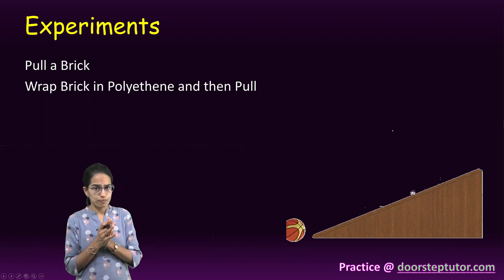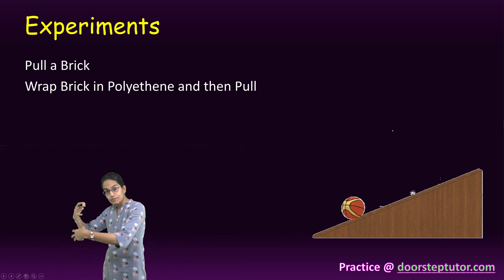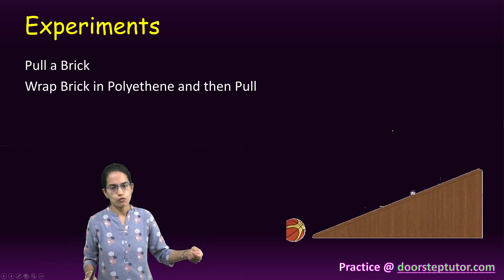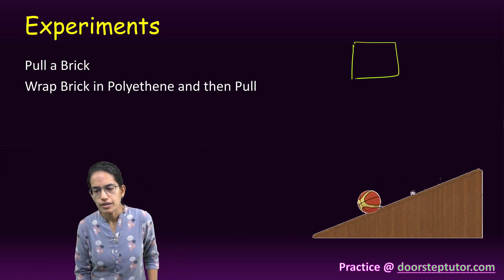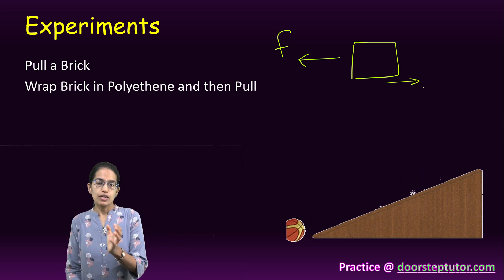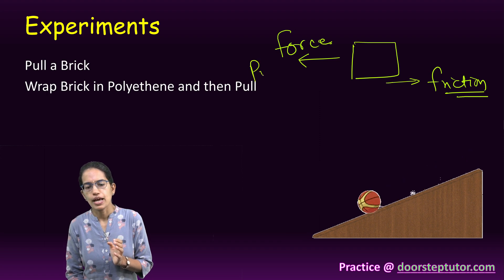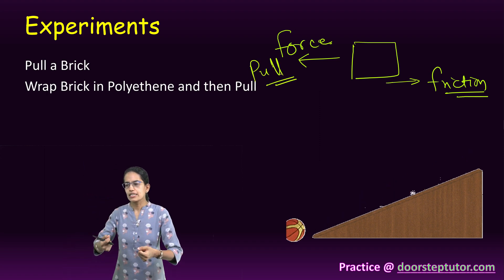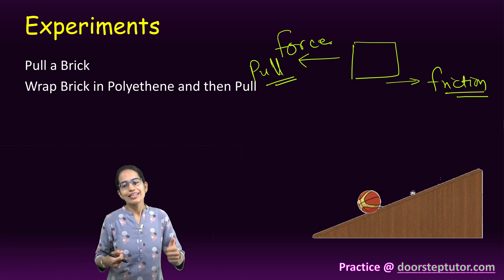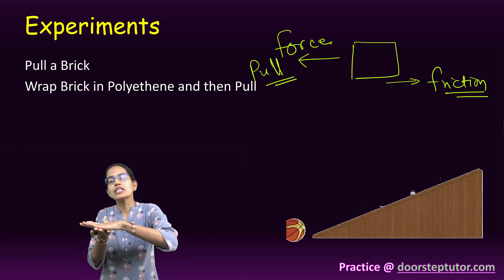Let's say I take a piece of brick and pull it — I would require a lot of force. But if I wrap this brick in a polythene bag and drag it, it would be a relatively smoother task. So when there is a body and you are applying a force onto it, there is a force which tries to resist that movement, and this is called friction.